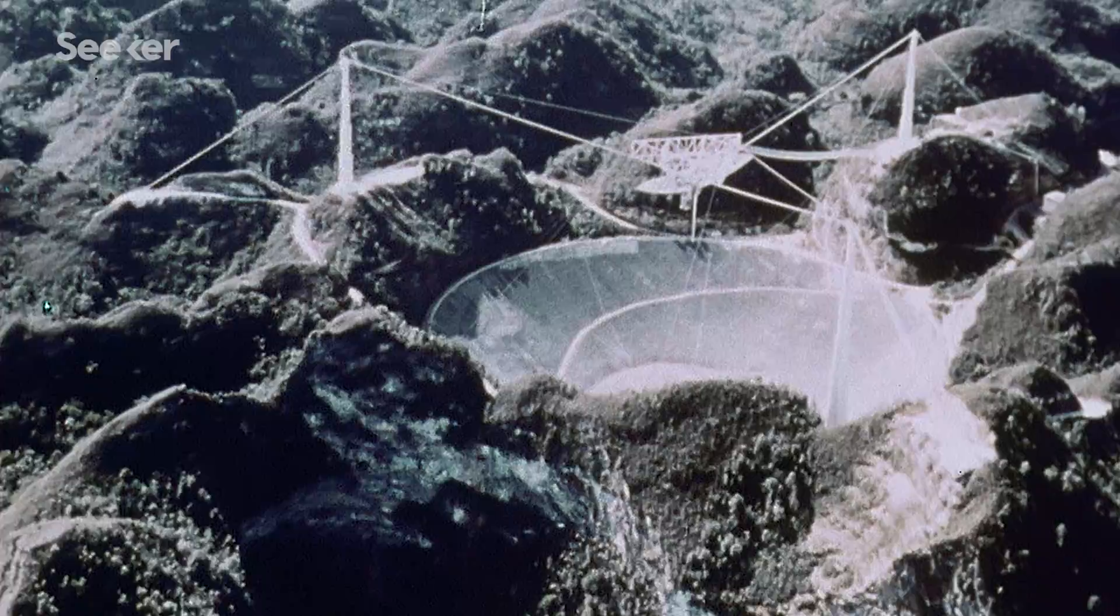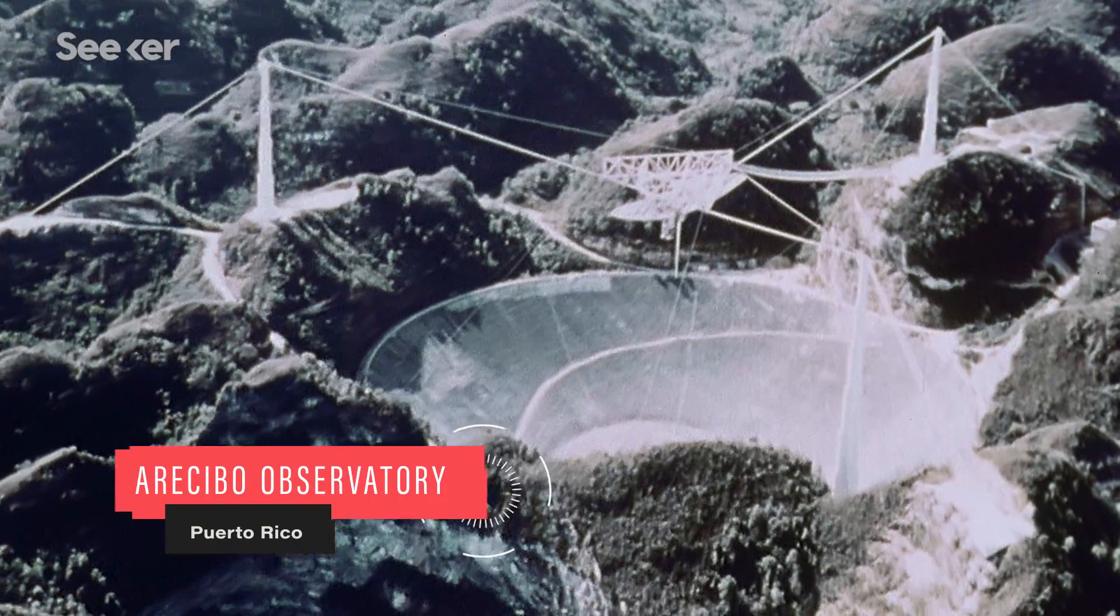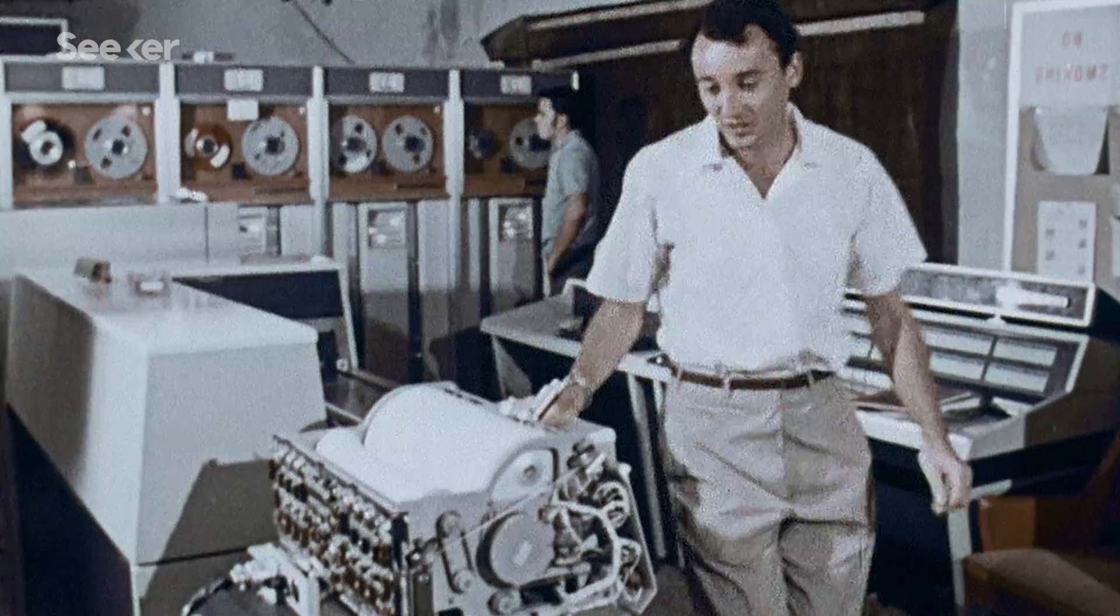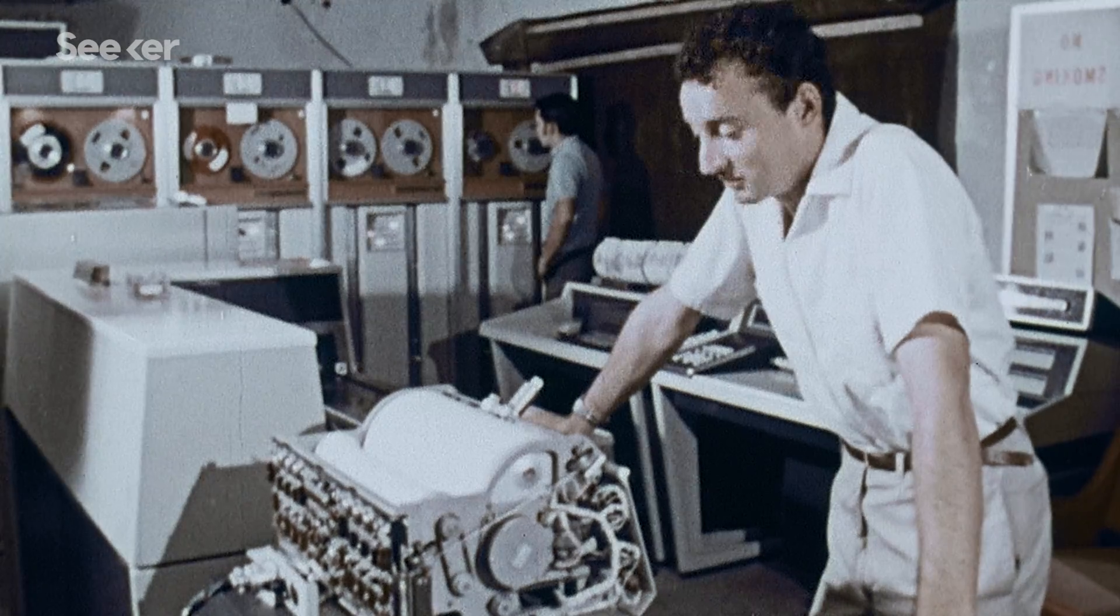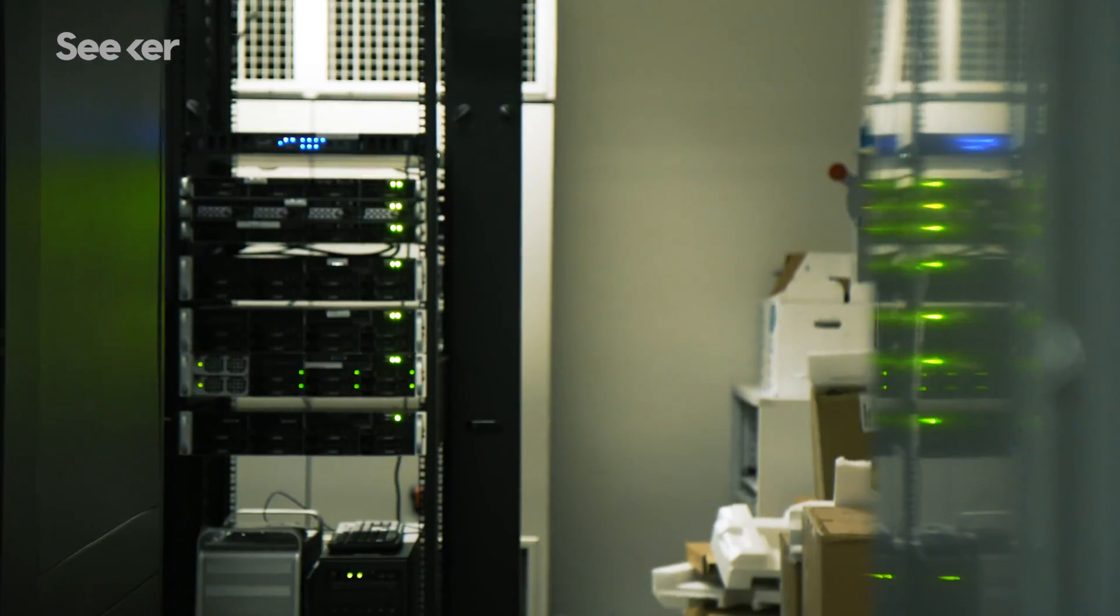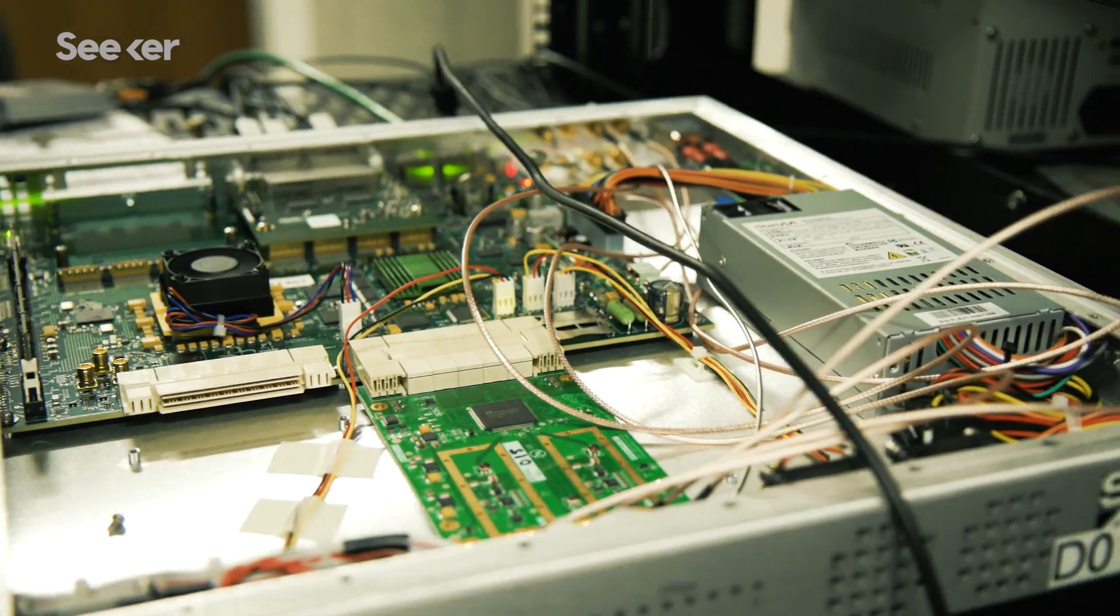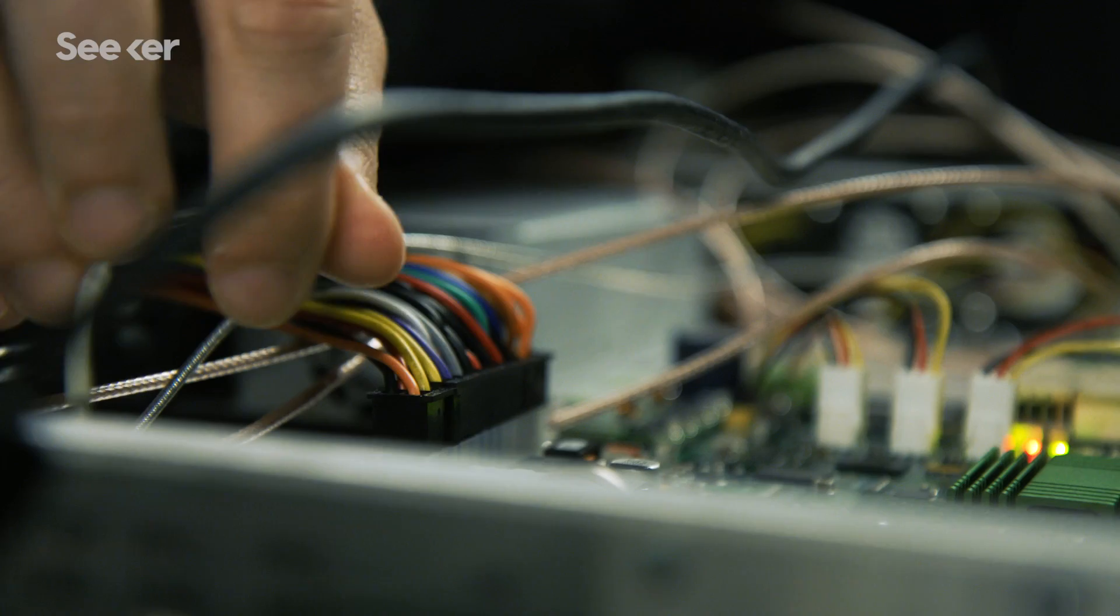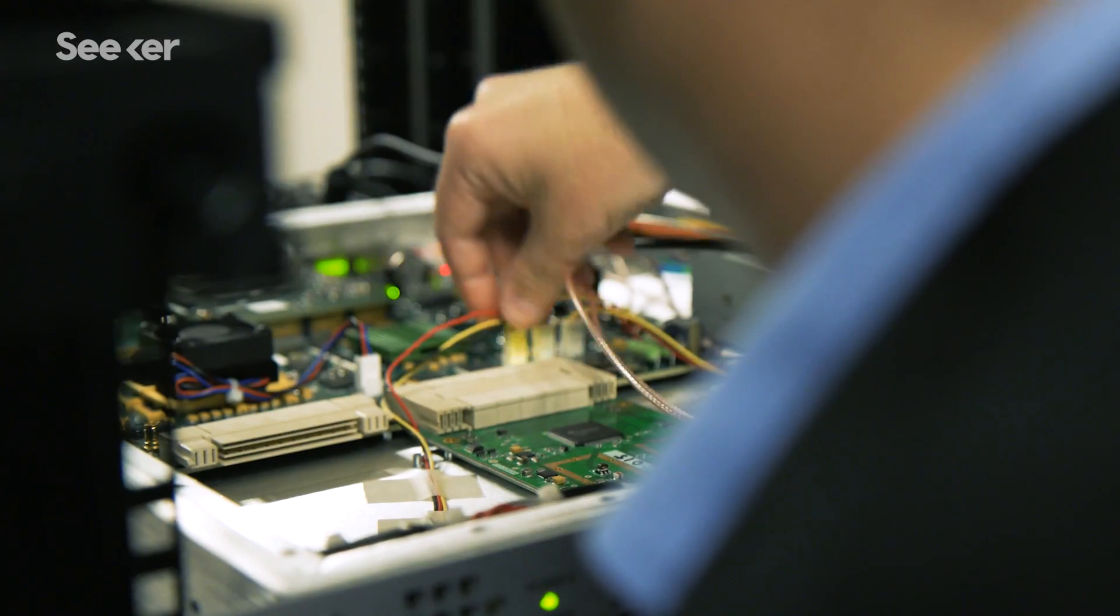When SETI first started, we could only search maybe a hundred radio channels, maybe 200 radio channels, and we had to tune by hand. Now, today, 60 years on, we can search 10 billion radio channels and we can search them instantaneously.